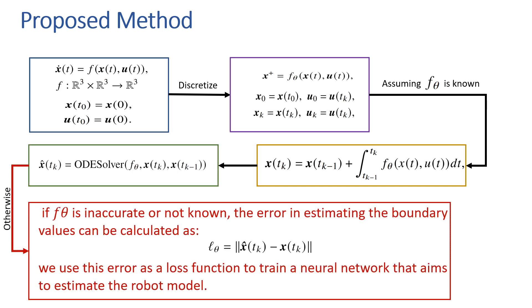However, if Fθ is inaccurate or not known, the error in estimating the boundary values can be calculated and used as a loss function to train a neural network.